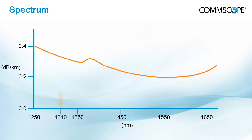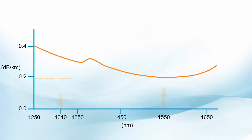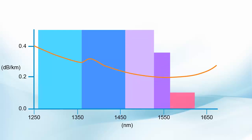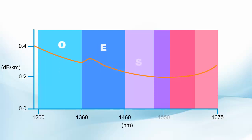Starting at 1310 nanometers, new wavelength transmission bands were introduced, first focusing on the 1550 nanometer band for lower fiber attenuation. Finally, the International Telecommunication Union (ITU) standardized transmission wavelength bands for optical communication over the entire wavelength range between 1260 and 1675 nanometers: O, E, S, C, L, and U band, supporting WDM techniques from 1260 to 1625 nanometers.